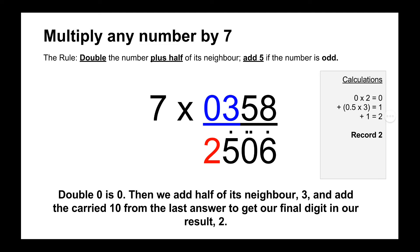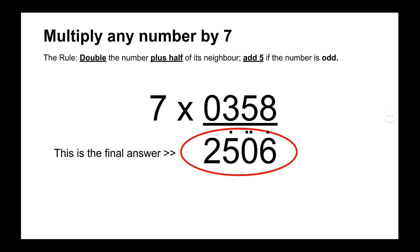And then we move across to the next number, which is 0. And because 0 doubled is still 0, we can effectively ignore that, and then we add half of its neighbor. So half of 3 is 1, so 0 plus 1 is 1, and then we add the carry 10 from the answer before to get 2. And that's our final answer: 2,506.